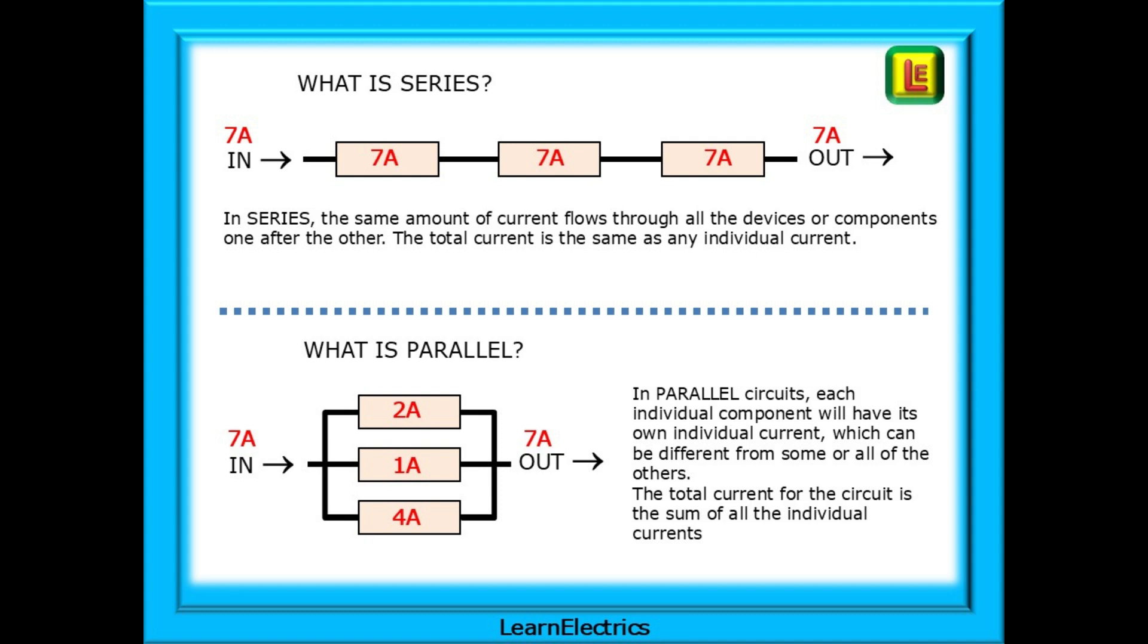Both circuits, as shown here, have a current flow of 7 amps, but they are different. In series, the same amount of current flows through all the devices or components one after the other. The total current is the same as any individual current. 7 amps through every component. In parallel circuits, each individual component will have its own individual current, which can be different from some or all of the others. The total current for the circuit is the sum of all the individual currents. In this case, 2 amps plus 1 amp plus 4 amps, making the total current 7 amps.